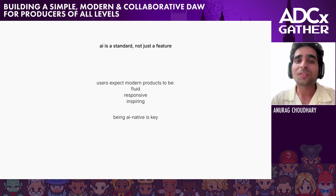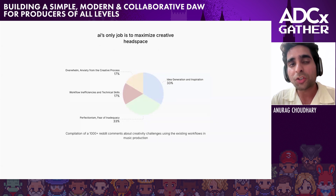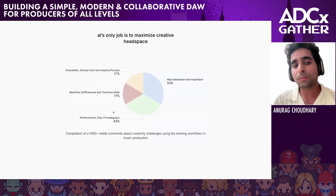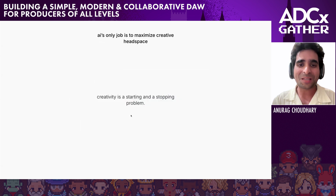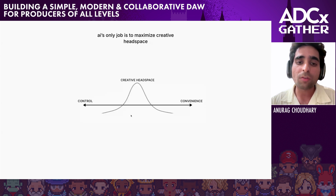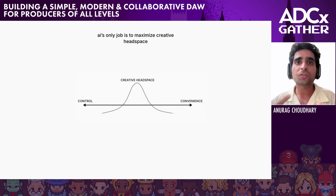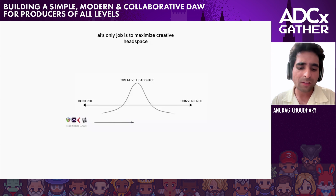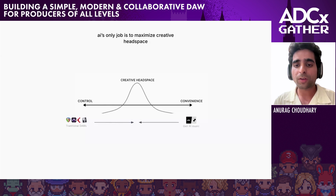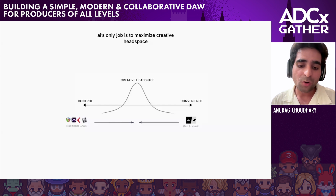To be AI-native is key, and it affects how you build from the ground up. Our research, reading through thousands of comments, found that creativity is an inspiration problem and a perfectionism problem — which narrows down to a starting and stopping problem. AI's role is to maximize creative headspace. If you offer too much control, that can be overwhelming. If you offer too much convenience, that removes creative agency. The challenge for AI is to find the middle ground, which is why traditional DAWs are taking steps toward more convenience, while adventurous AI companies like Suno and Udio try to give more creative agency and control.